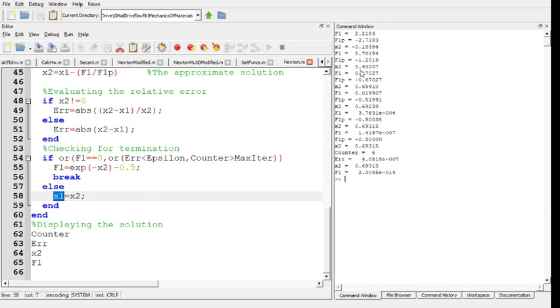Then following that gets to 0.654, 0.692, 0.69315.